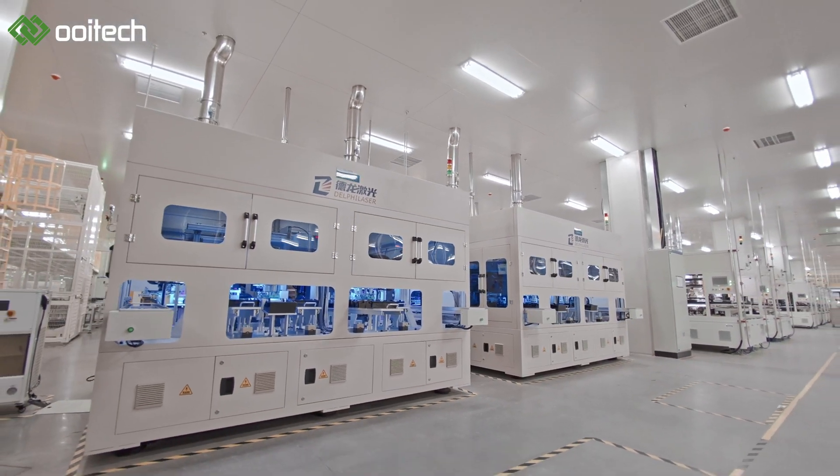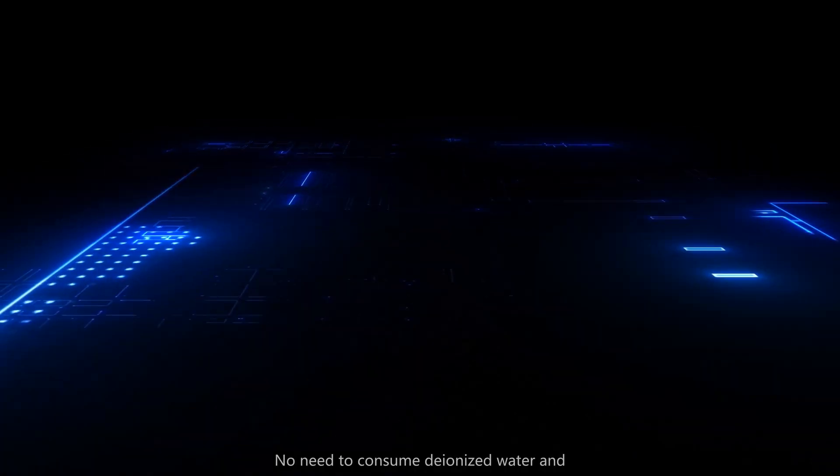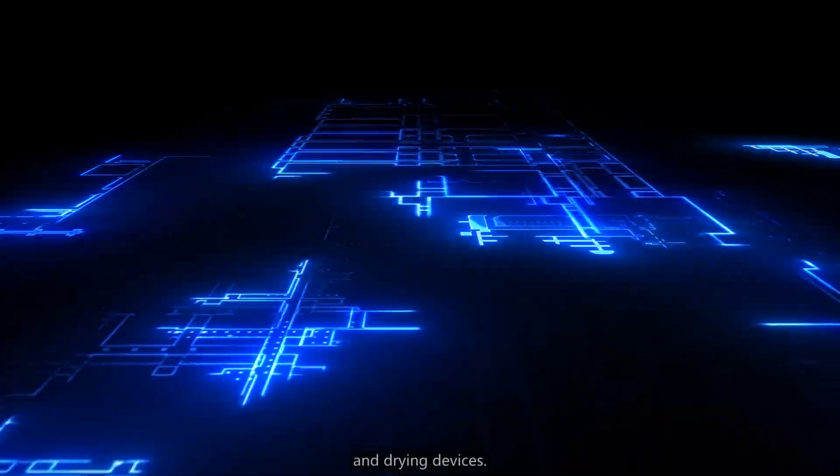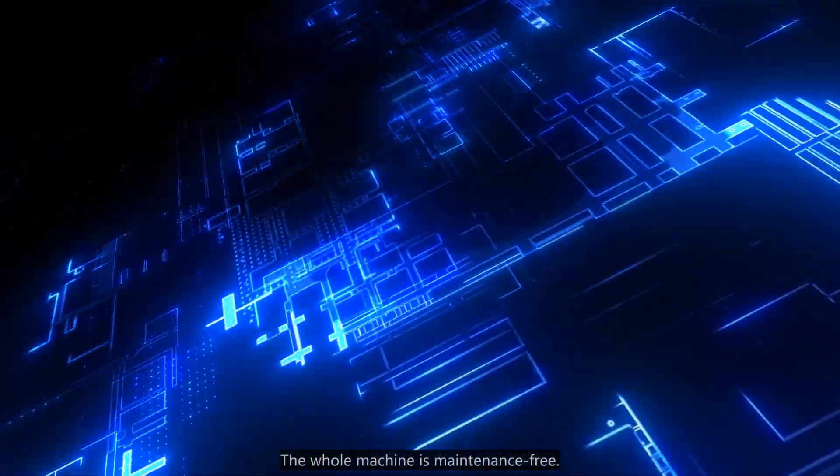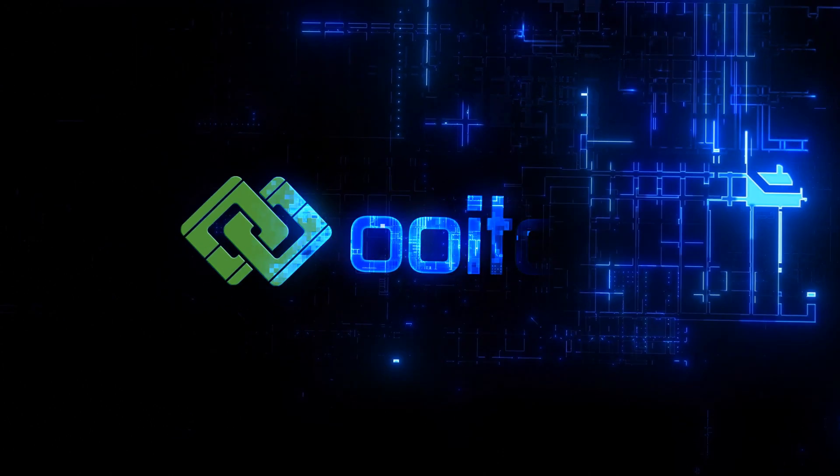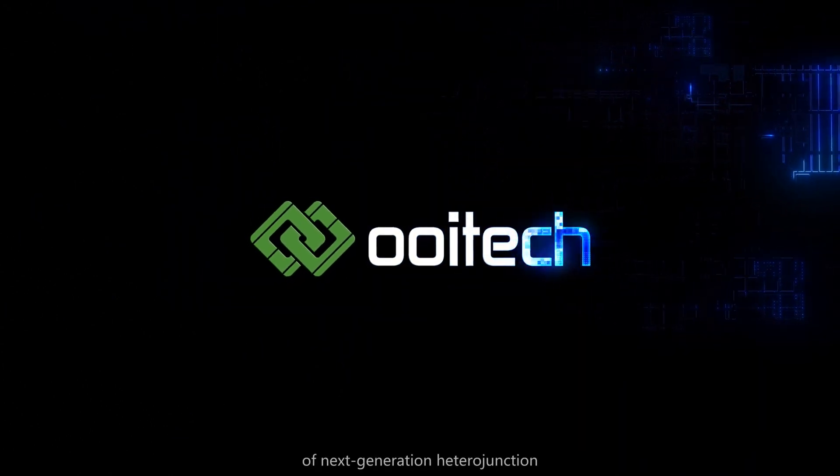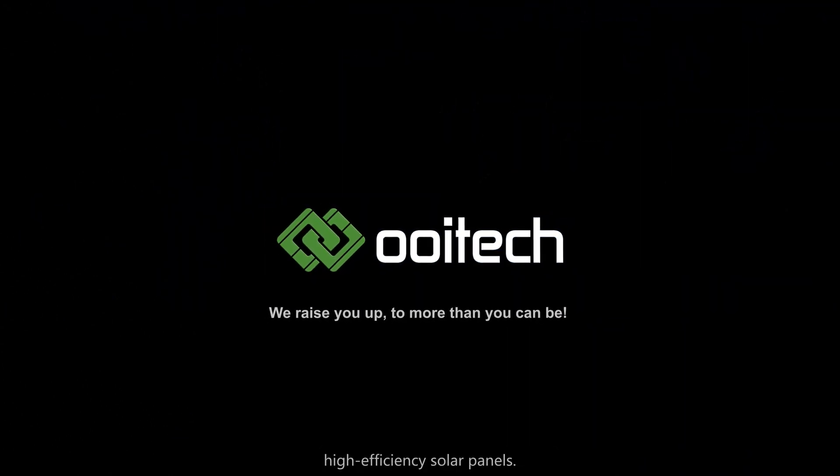During production, there's no need to consume deionized water or maintain water-spraying and drying devices. The whole machine is maintenance-free, further reducing production costs and laying the foundation for mass production of next-generation heterojunction high-efficiency solar panels.